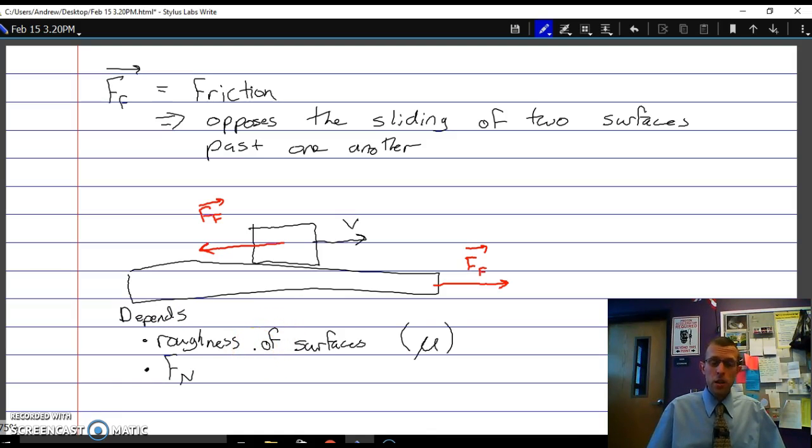Now a common demonstration of friction is rubbing your hands together, and that second point you can get pretty clearly here. If you push your hands together harder, it is harder to rub them past each other. You also feel a lot more heat generated. The roughness of the surfaces, you probably don't want to test this that way because that'd be like putting sandpaper on one of your hands and then rubbing, and that just seems uncomfortable.